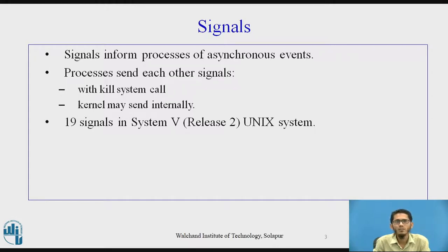Signals inform the processes of asynchronous events. Processes may send each other signals, and those signals could be sent either with the kill system call or the kernel may sometimes send signals internally. There are a total of 19 signals in System V Release 2 of Unix, and these signals are categorized.